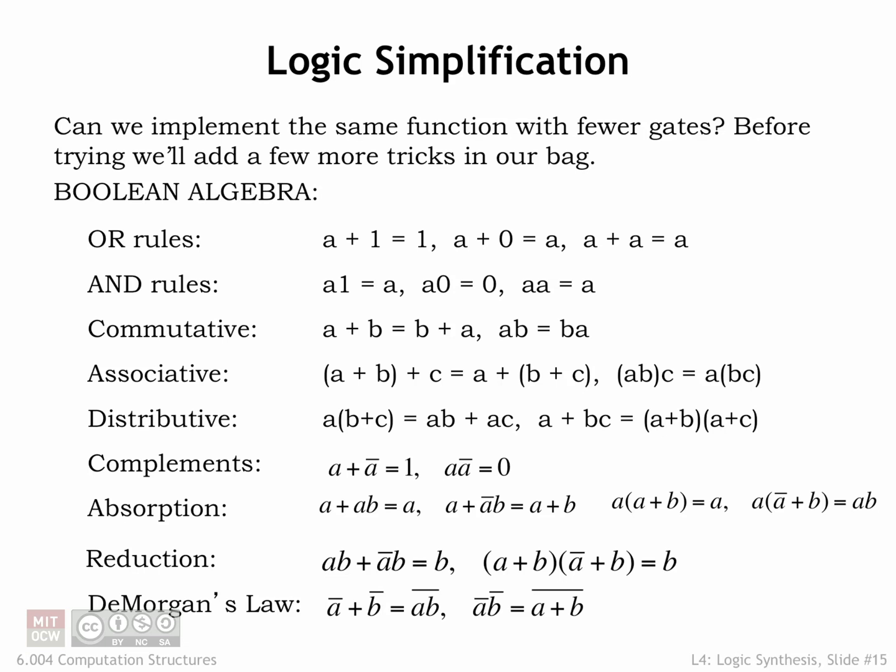The previous sections showed us how to build a circuit that computes a given sum-of-products expression. An interesting question to ask is if we can implement the same functionality using fewer or smaller gates. In other words, is there an equivalent Boolean expression that involves fewer operations?